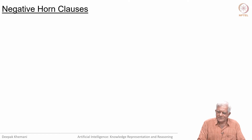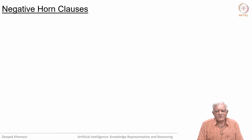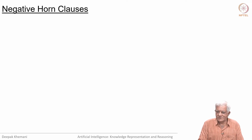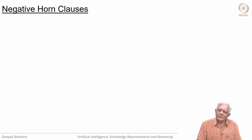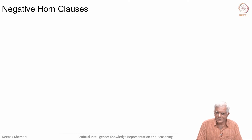Welcome back. We have been looking at a subset of first order logic called horn clause logic. We say that horn clauses are those clauses which have at most one positive literal; you can have any number of negative literals. A Prolog program is a positive definite horn clause, which means that there has to be at least one positive literal in every sentence.